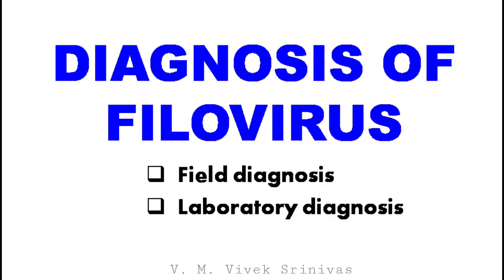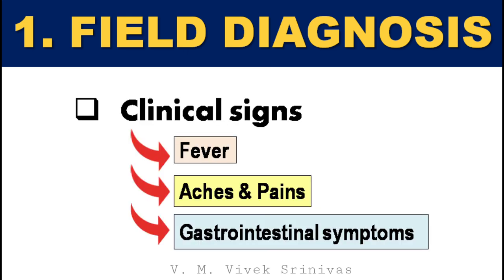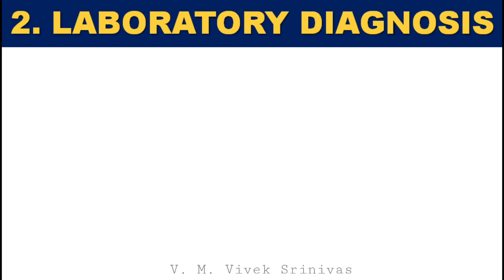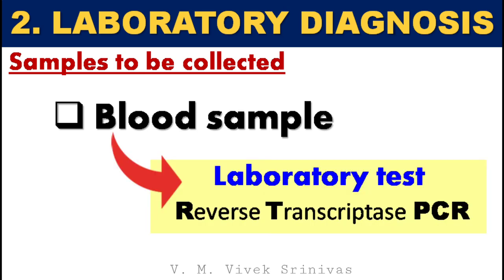Diagnosis can be done at field level or in laboratories. Field diagnosis is based on clinical symptoms, though signs and symptoms are often misdiagnosed for other infections like common flu, malaria, and typhoid fever. For laboratory diagnosis, blood samples are collected and confirmed for virus by reverse transcriptase PCR.